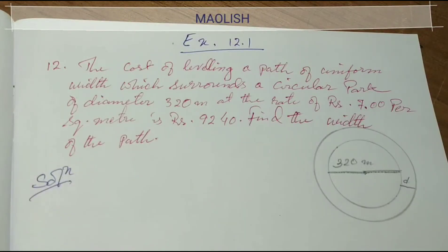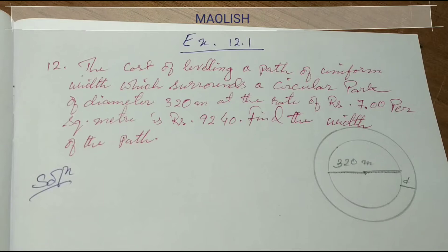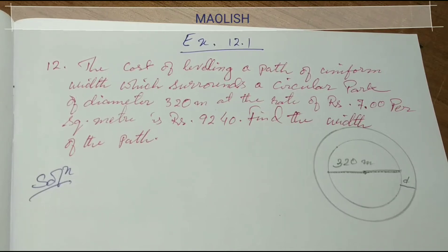Welcome to Maulish. Exercise 12.1, question number 12. The cost of leveling a path of uniform width which surrounds a circular park of diameter 320 meters at the rate of Rs. 7 per square meter is Rs. 9,240. Find the width of the path.